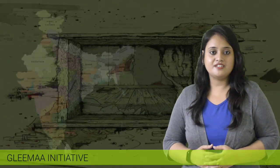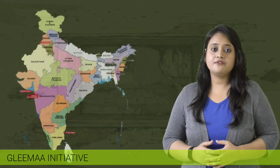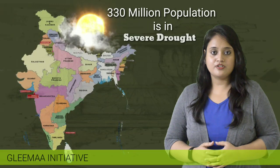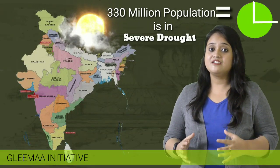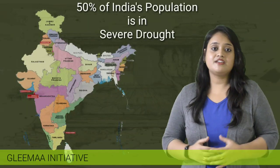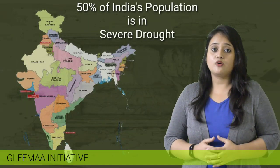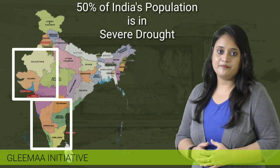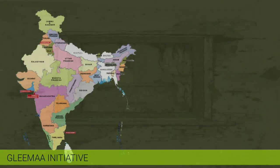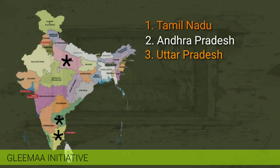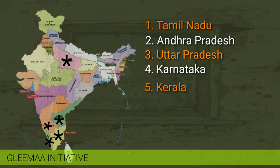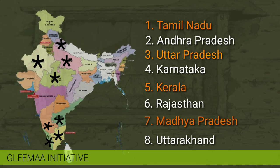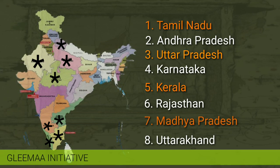If we talk about India, after 2 consecutive years of weak monsoon, 330 million people in India are in severe drought, which is equal to a quarter of India's total population. About 50% of India's total population is affected by severe drought, especially in the western and southern states. States like Tamil Nadu, Andhra Pradesh, Uttar Pradesh, Karnataka, Kerala, Rajasthan, Madhya Pradesh, and Uttarakhand are most affected by water scarcity in the form of chronic drought.